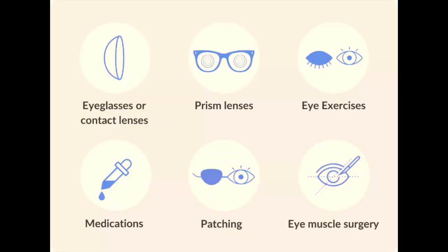Strabismus may be treated with eyeglasses, eye exercises, or surgery to correct the alignment of the eyes. It's important to note that early detection and treatment of vision problems is key to preventing vision loss. If you or someone you know may have a vision problem, it's important to schedule an appointment with your optometrist. Thank you.